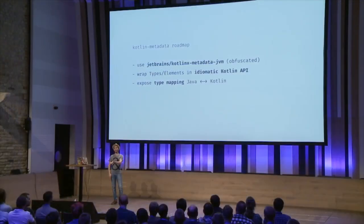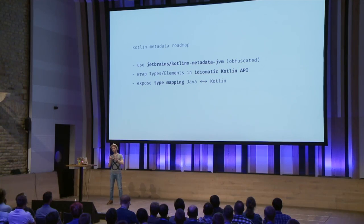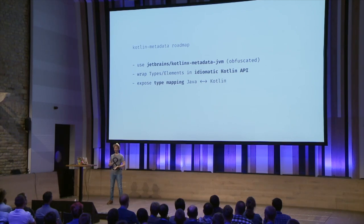One thing inside this that has not been exposed yet is a way to map any Java type to Kotlin type and vice versa. It might seem trivial, but int is Integer — but not always, it depends on many things. There are many mappings, and keeping them up to date yourself is a waste of time, and you'll never be as updated as the compiler can be. So exposing this can be really helpful.